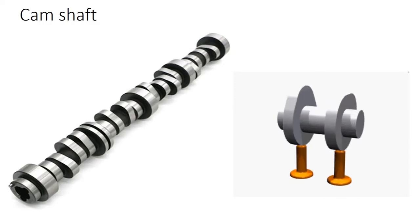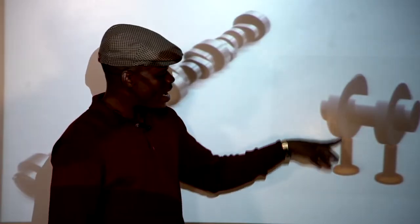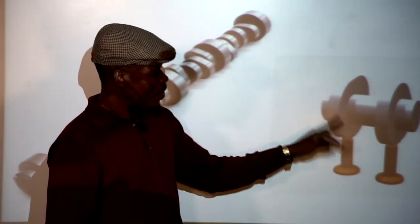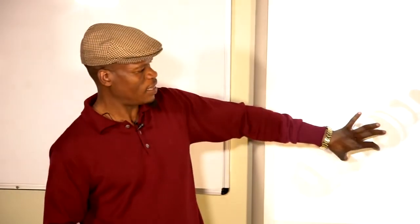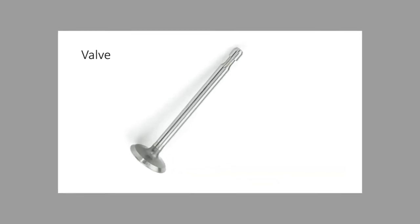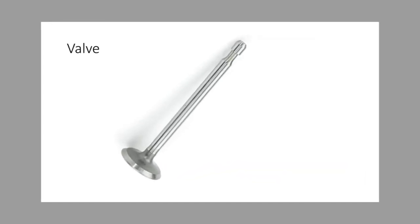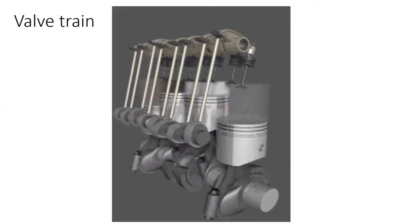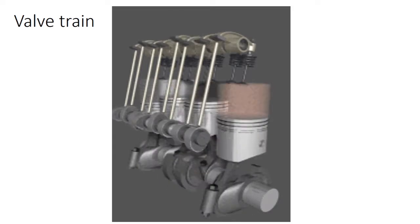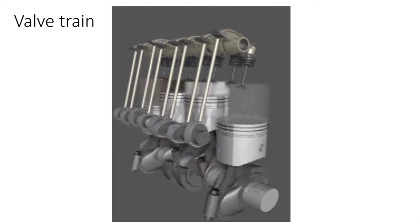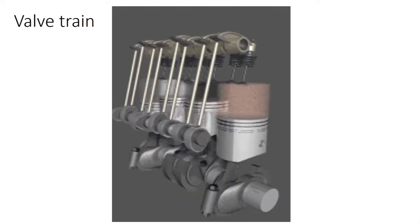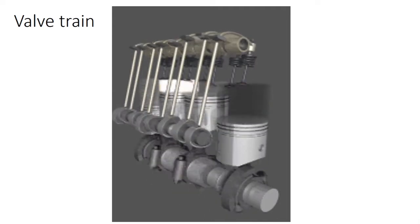The camshaft lobes open the inlet valve when required and close it at the right time. The camshaft is designed to operate at specific timings, so when purchasing one, make sure you buy it for the relevant engine. The valve train is the whole component connected between the camshaft lobes and the valves, transmitting the motion to open and close them. The whole of that part is referred to as the valve train.